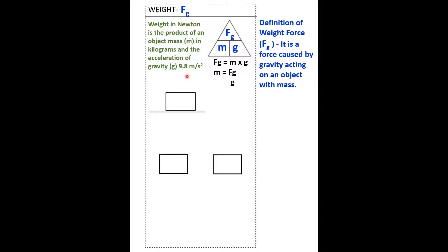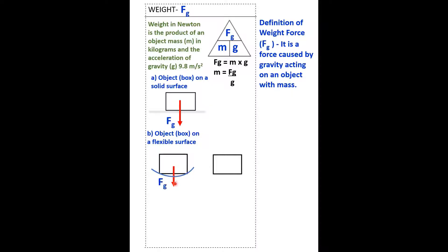Let's take a look at a couple of situations about weight force. Number one: an object, in this case a box, on a solid surface represented by this gray line. The weight is a straight arrow from the center of mass of the object downward — this is F-G. The second situation is a box on a flexible surface, so it's going to bend a little bit. The F-G arrow should be the same size; the weight is the same.